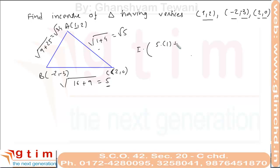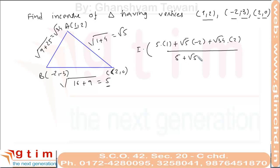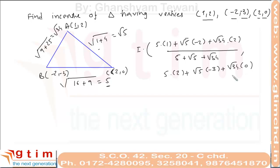Using the incenter formula, the x-coordinate is (5×1 + √5×(−2) + √34×2) / (5 + √5 + √34), and the y-coordinate is (5×2 + √5×(−3) + √34×0) / (5 + √5 + √34).